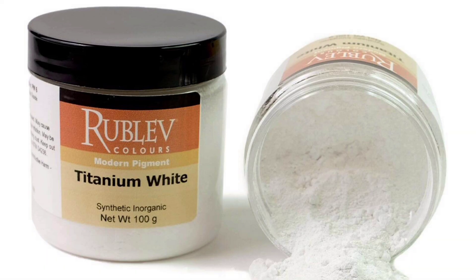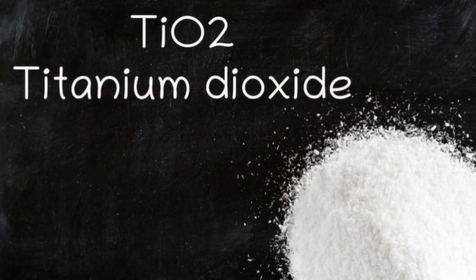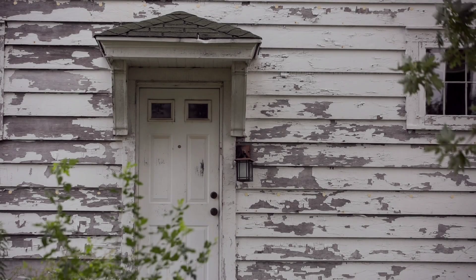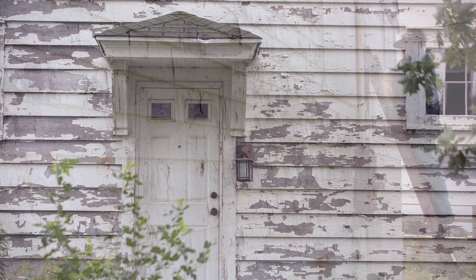In 1821, the titanium pigment titanium dioxide was discovered, but it was not until 1921 that a titanium white oil color suitable for artistic purposes was introduced. By the late 1920s, titanium and zinc white had succeeded lead white as the dominant product in the market for white pigments. In 1978, lead-based paints were banned for residential use in the United States.